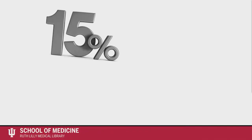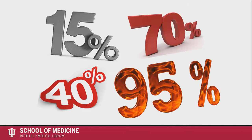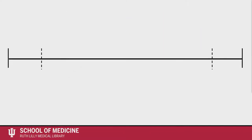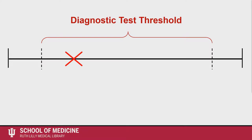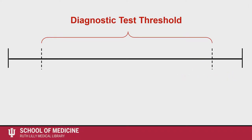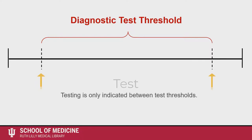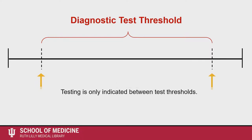Once you figure out the pretest probability of a disease, you compare that with your test thresholds for a disease. Your patient can fall anywhere along a continuum of disease. If the pretest probability is below your diagnostic test threshold, you likely won't test. However, if the pretest probability falls somewhere in the diagnostic test threshold, you will want to test. Depending on the result of that test, the probability of disease increases or decreases. It is important to know that testing is only indicated between test thresholds, and test thresholds vary by disease and test.